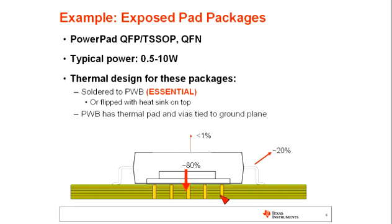Going back to the two key concepts — thermal path and heat spreading — the thermal path in this example runs from the active area of the die, down into the board, spreading into the board, and then convected and radiated out. Thermal spreading occurs somewhat in the package through the die and pad, but mostly in the PCB itself. To support higher power dissipation with this package family, we must support the thermal path with good soldering and a well-designed PCB, with heat spreading primarily accomplished in the PCB.